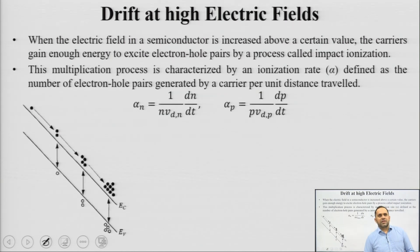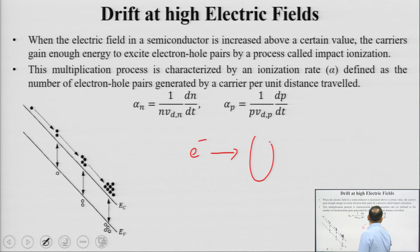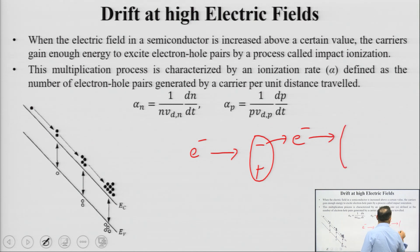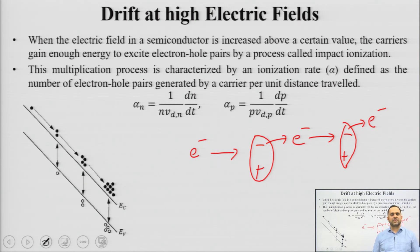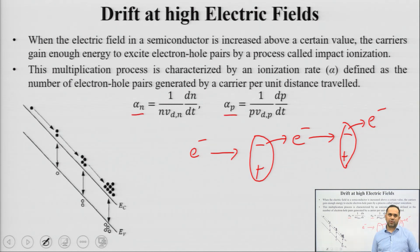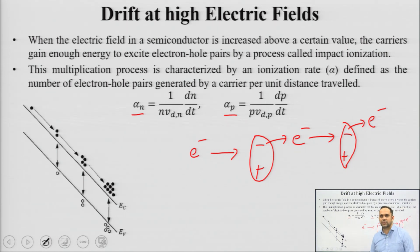When the electric field is increased above a certain value, carriers gain enough energy so that electrons can collide with another atom and knock off another electron. This high-speed electron can hit another atom and knock off yet another electron. This phenomena is known as impact ionization. This multiplication process is characterized by an ionization rate α, defined for both electrons as well as holes. One high-energy electron generates one electron-hole pair, and further high-energy carriers keep generating additional electron-hole pairs.